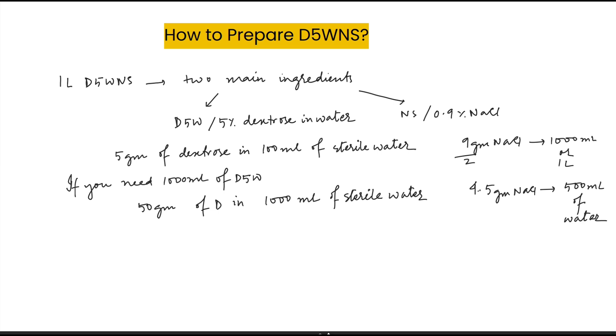So to make 1 liter of D5WNS, what you need to do? You need to add 50 grams of dextrose to 1000 ml of NS or 0.9% NaCl solution.